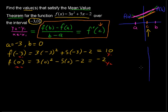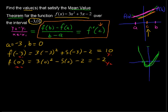Now I'll draw a rough sketch of what this function looks like. When x is -3, it's way up at 10. It comes way down, and then when x is 0, y is -2. It actually bottoms out below that and then comes back up. We're trying to find some point along this graph where the slope equals the slope between these two points — probably somewhere in here.